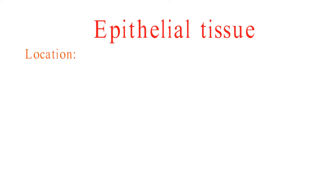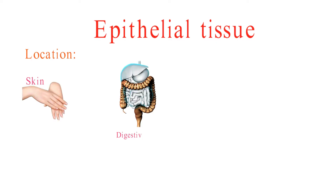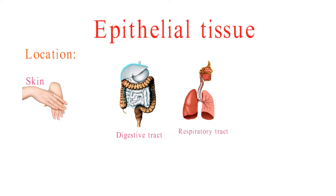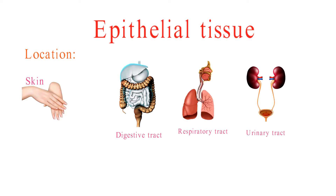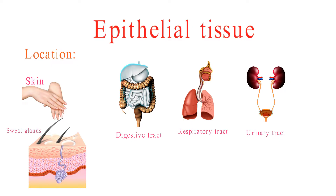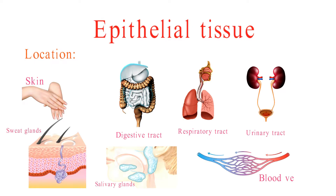Epithelial tissue is found all over the body, including the skin, lining of the digestive tract, respiratory tract, and urinary tract, glands such as the sweat glands and salivary glands, and the lining of the blood vessels and other organs.